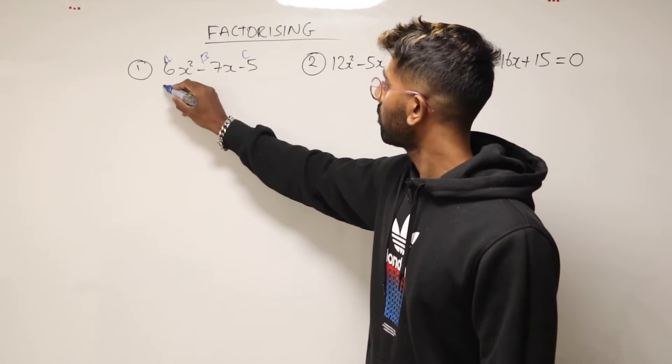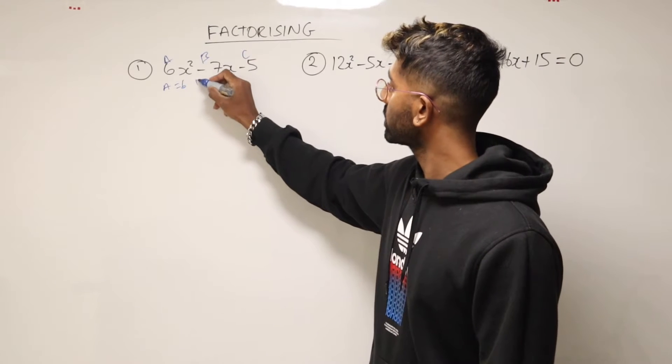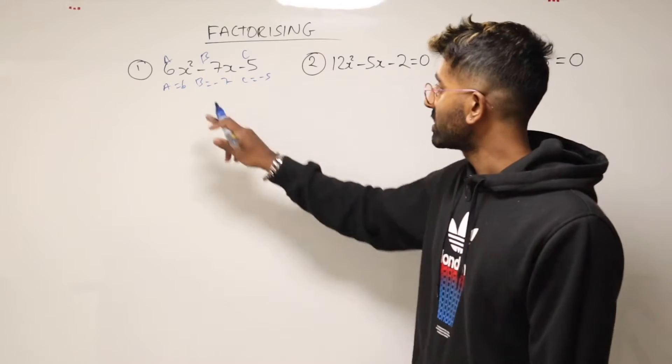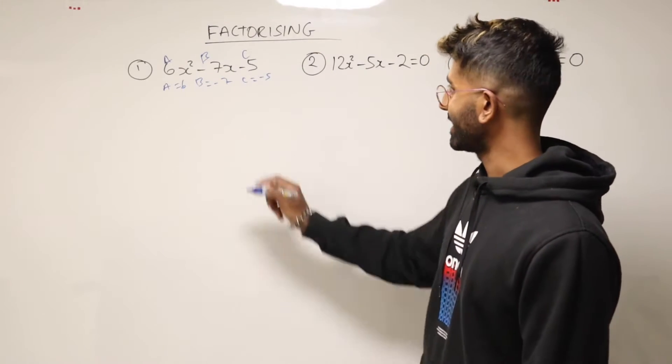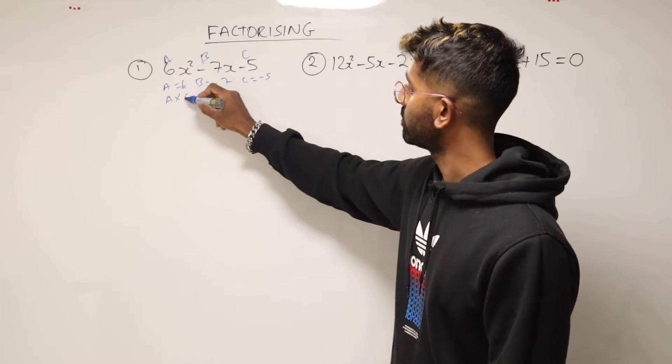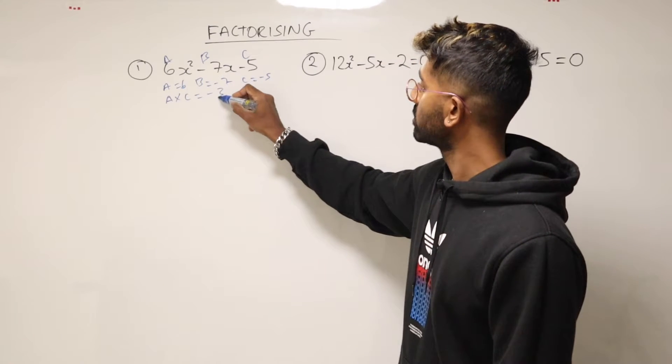So a equals 6, b equals minus 7, and c equals minus 5. What do we do? We take a and multiply it by c. So that times that.